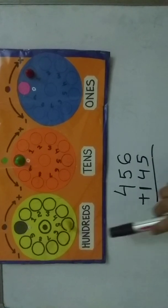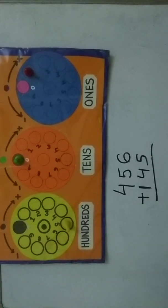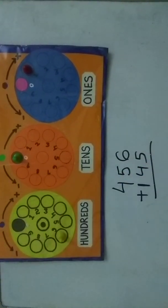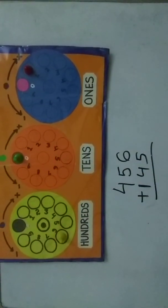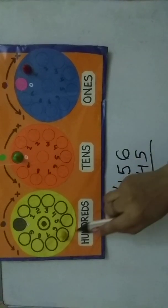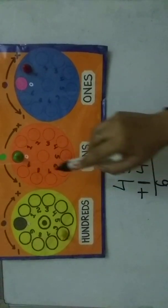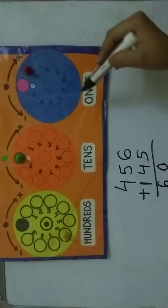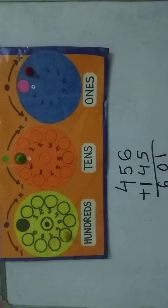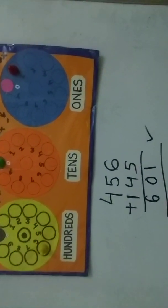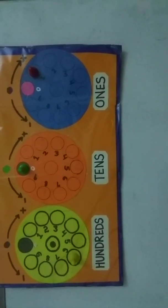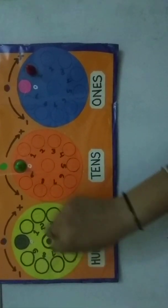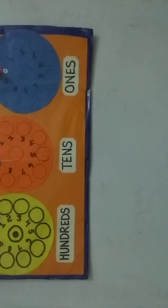Now add the hundreds digit, which is one — move one step forward. The answer reads: the ones circle shows one, the tens circle shows zero, and the hundreds circle shows six, giving us 601. That is your answer for the addition.